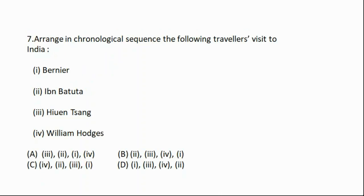Question number seven: Arrange in chronological sequence the following travelers' visits to India — option one: Bernier, option two: Ibn Battuta, option three: Xuanzang, option four: William Hodges. The correct answer is option A: three, two, one, four — that means Xuanzang, Ibn Battuta, Bernier, and William Hodges.